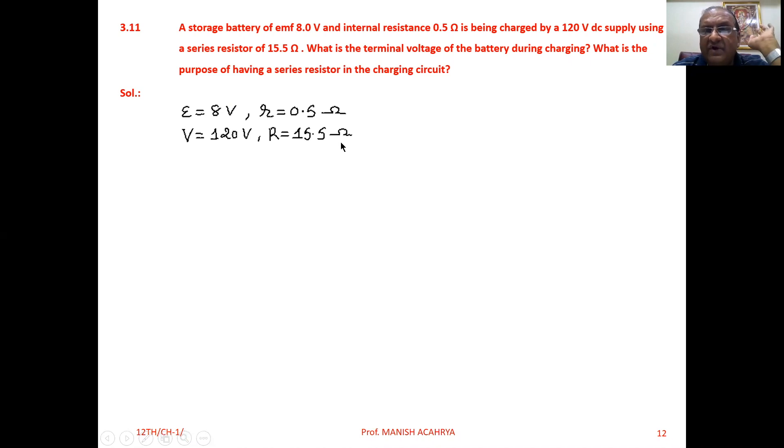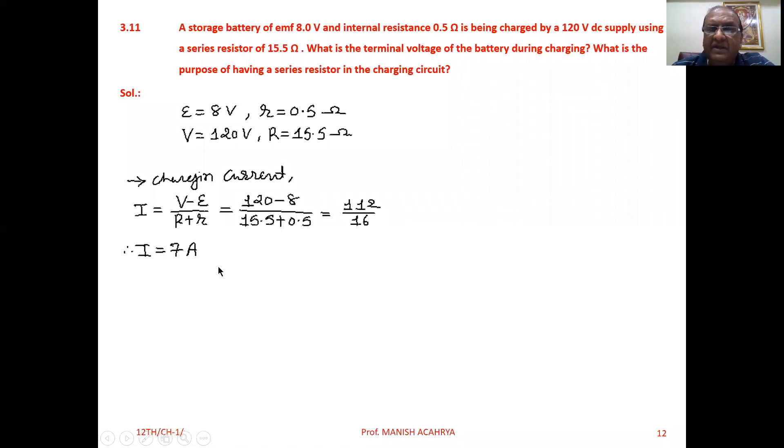Now the equation for the charging current is I = (V - E)/(R + r). So we can write V = 120V, E = 8V, R = 15.5Ω, and r = 0.5Ω. You will get the answer I = 7 amperes.